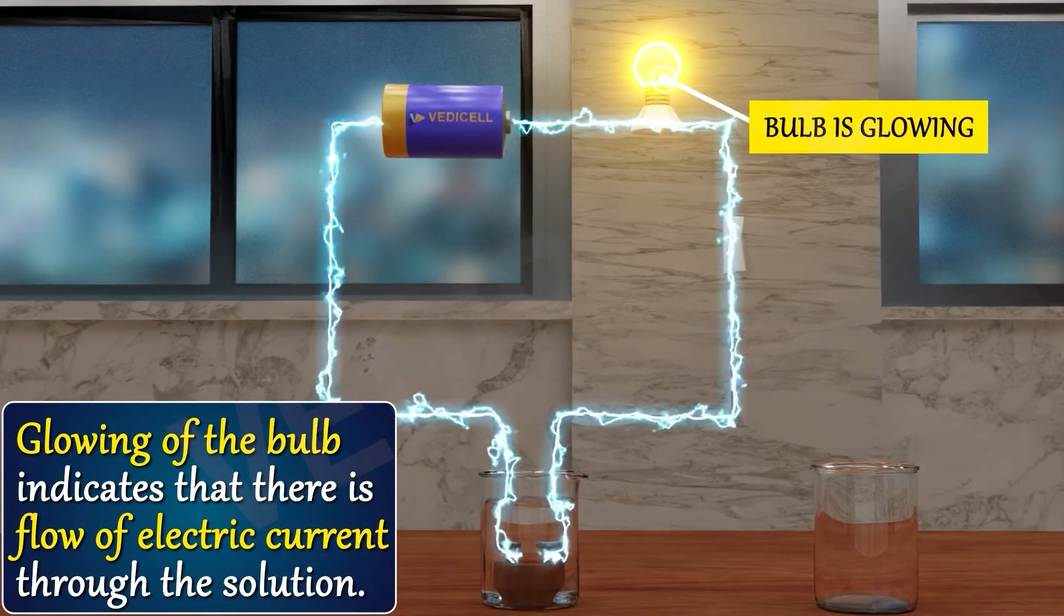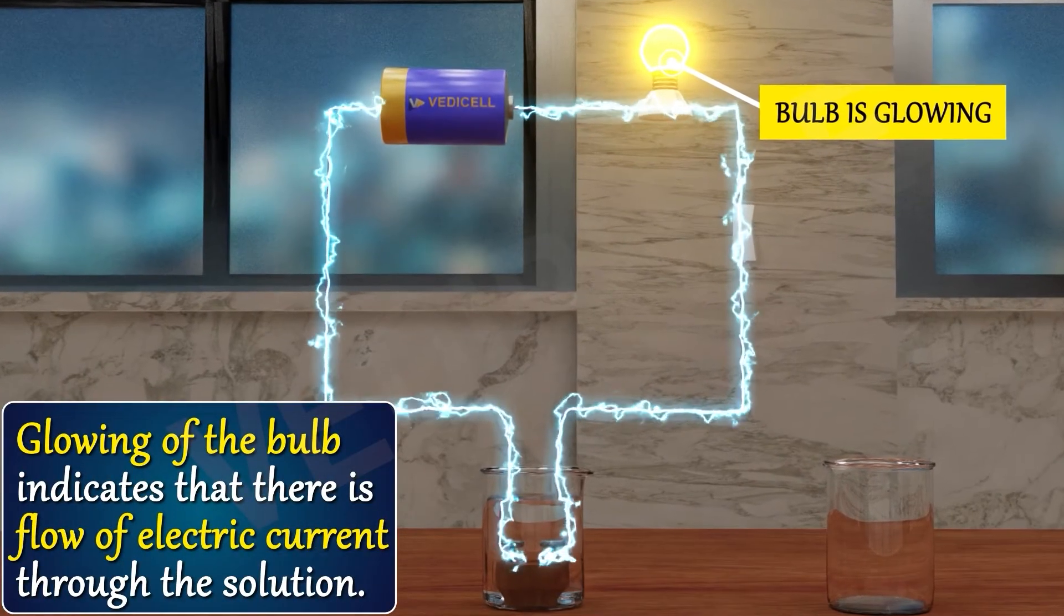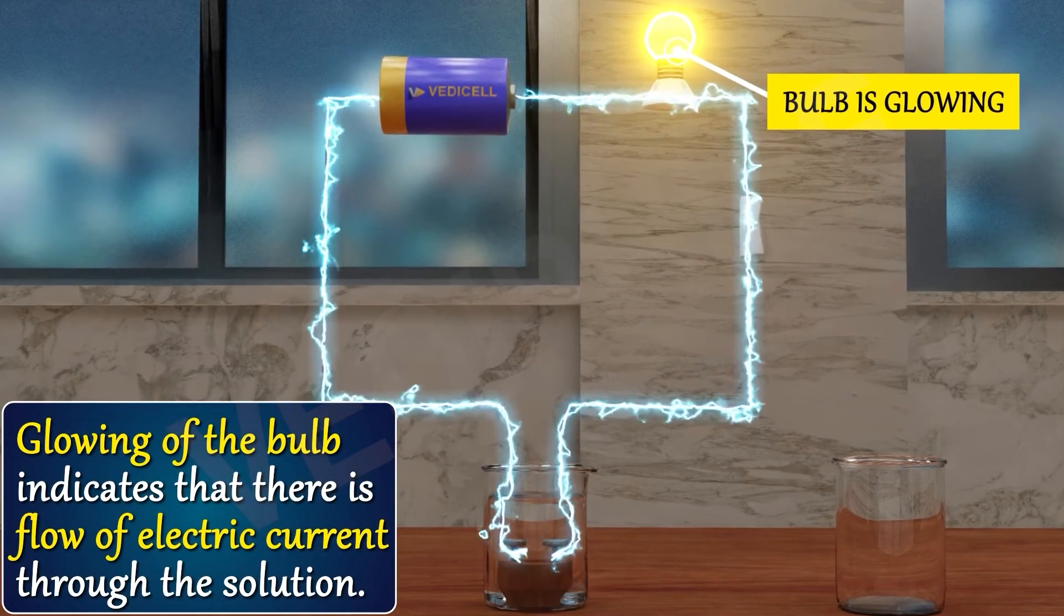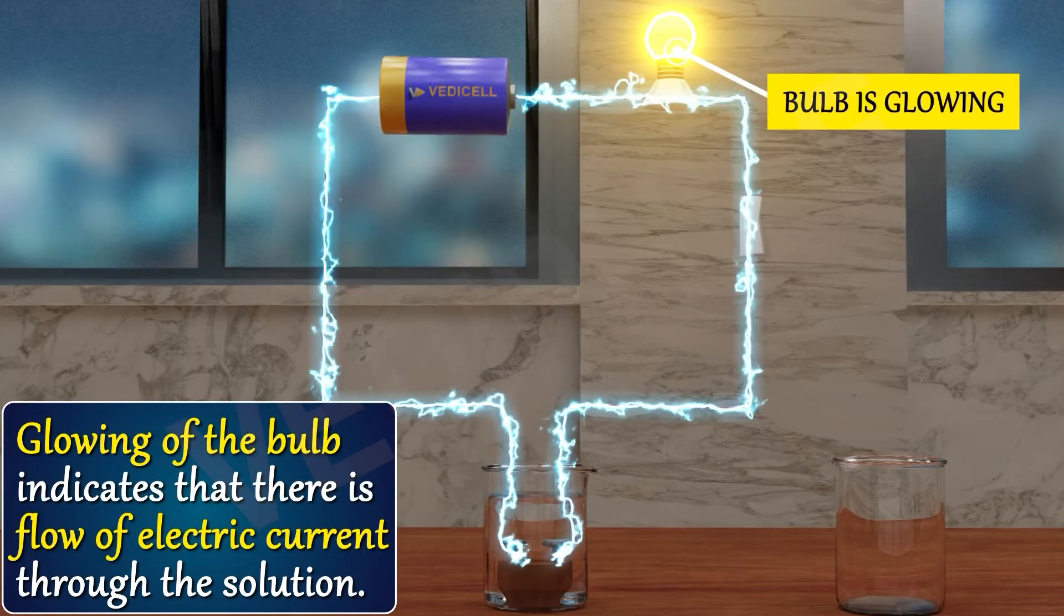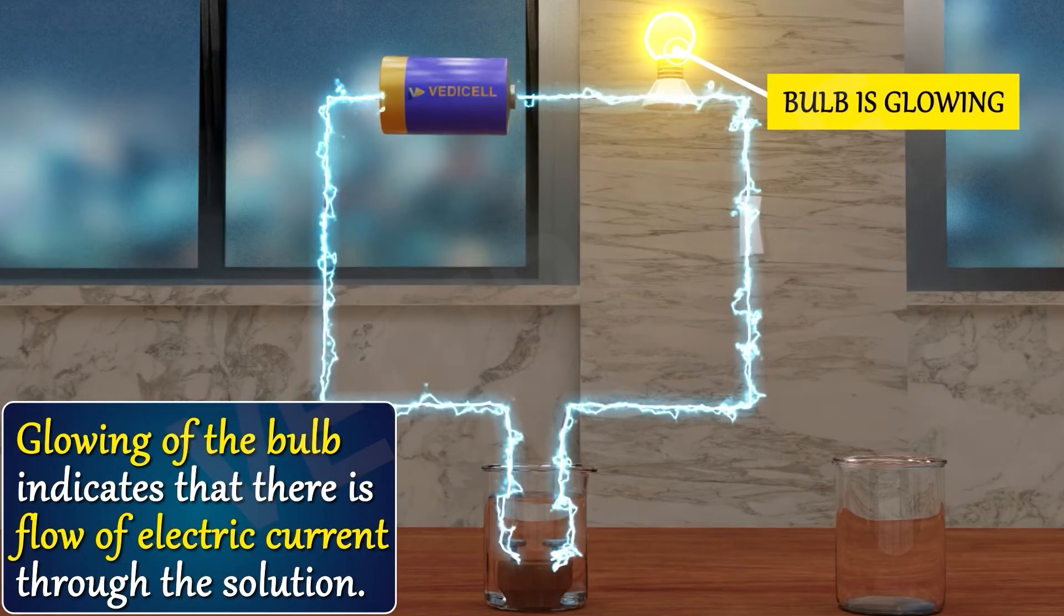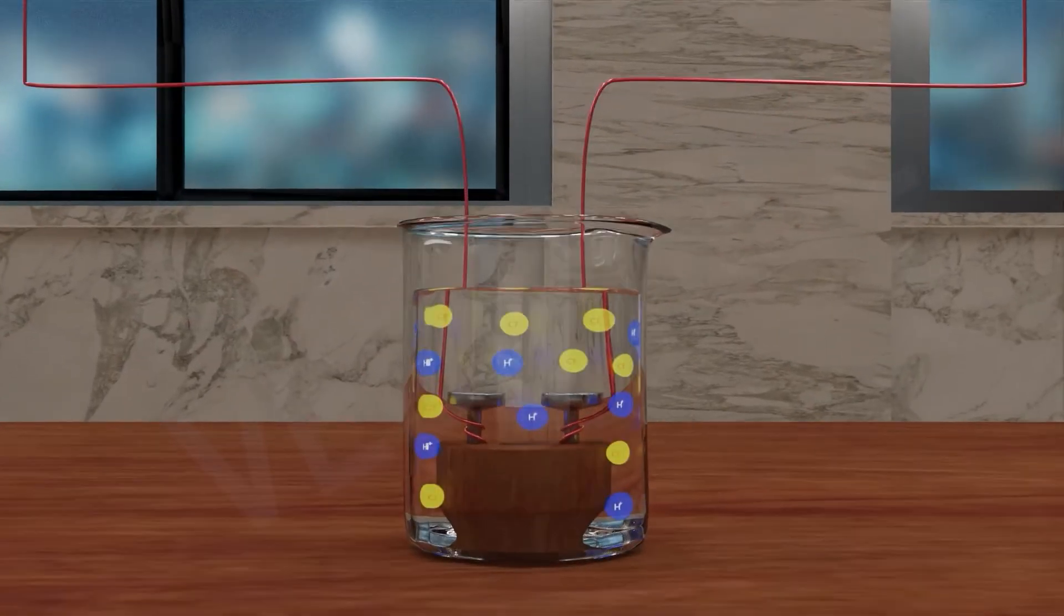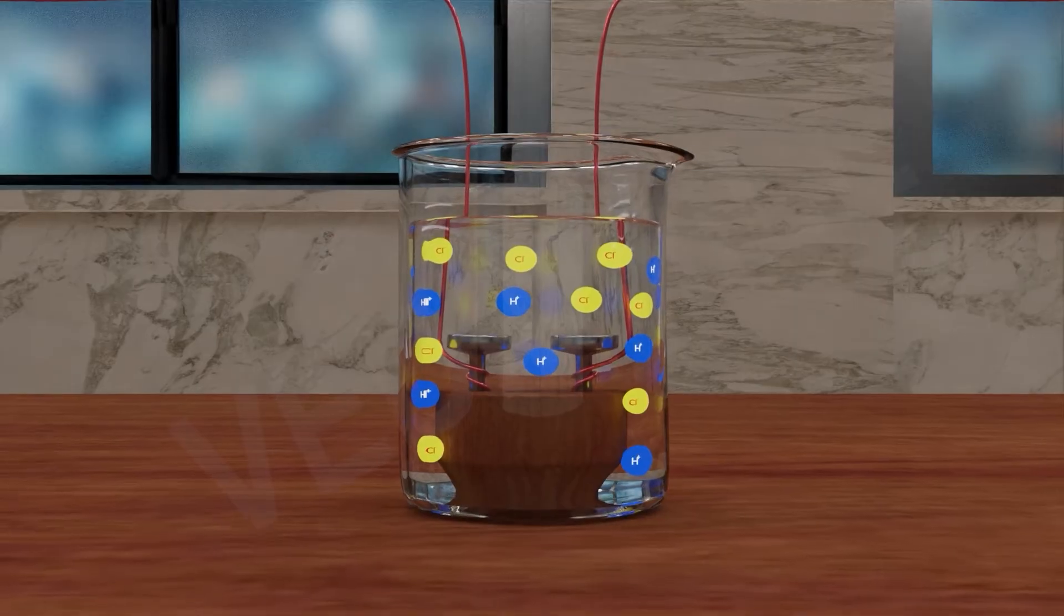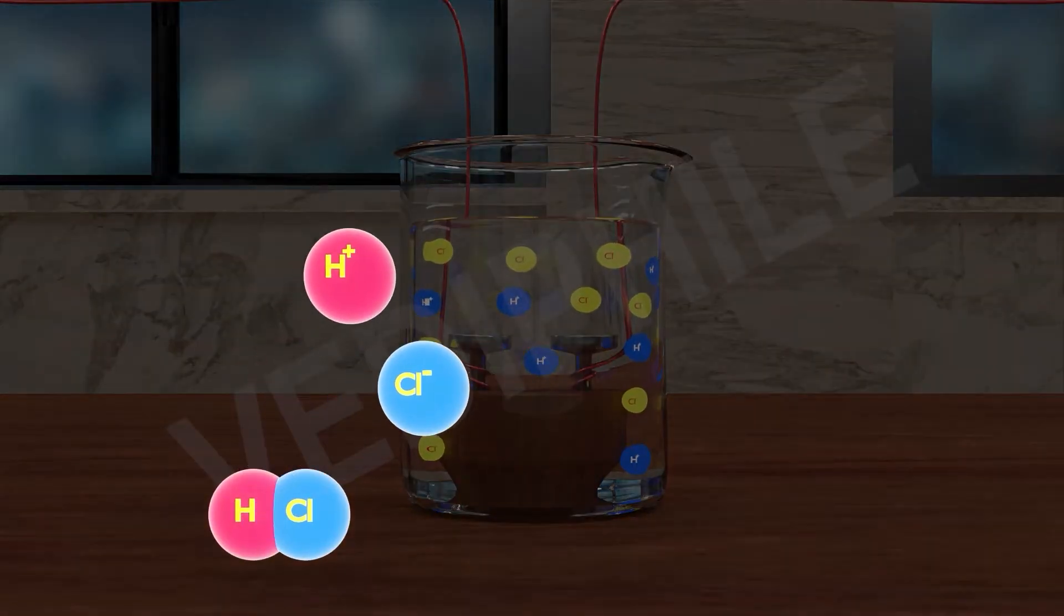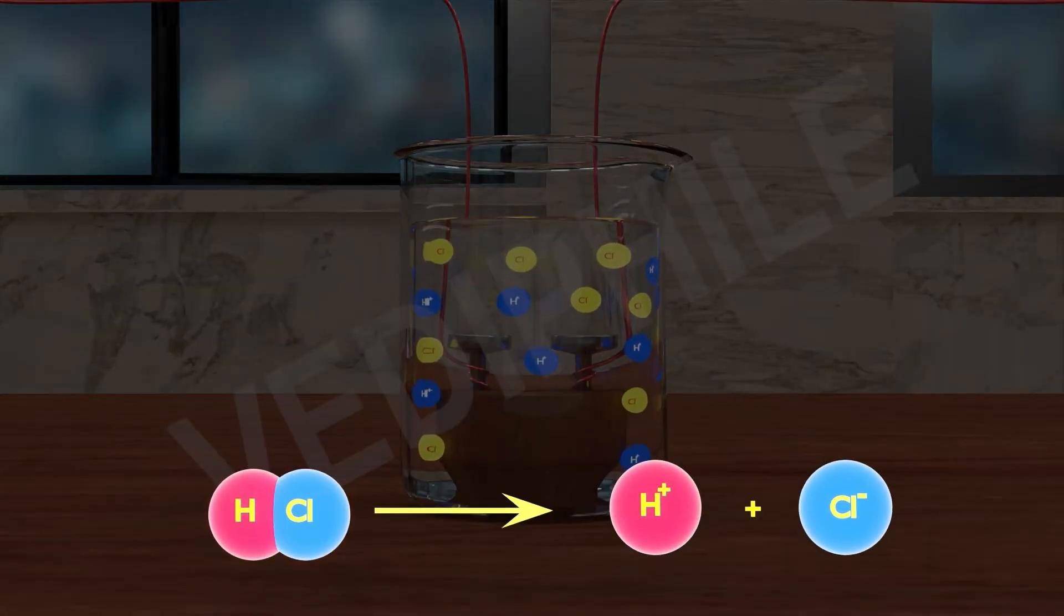Glowing of the bulb indicates that there is a flow of electric current through the solution. The electric current is carried through the acidic solution by ions. Can you see here the anion and cation in HCl? In HCl, H plus is a cation and Cl minus is an anion.